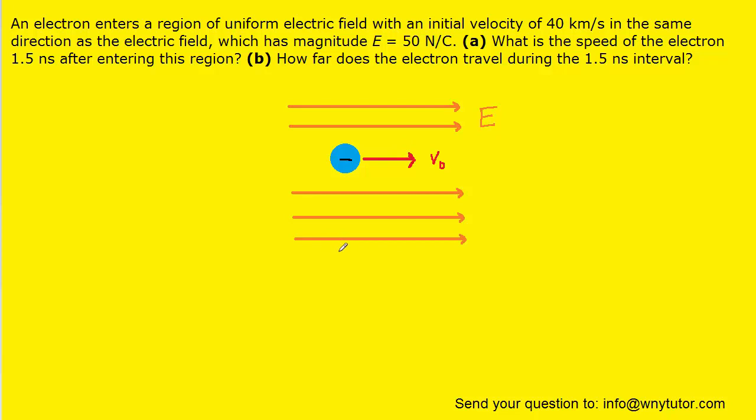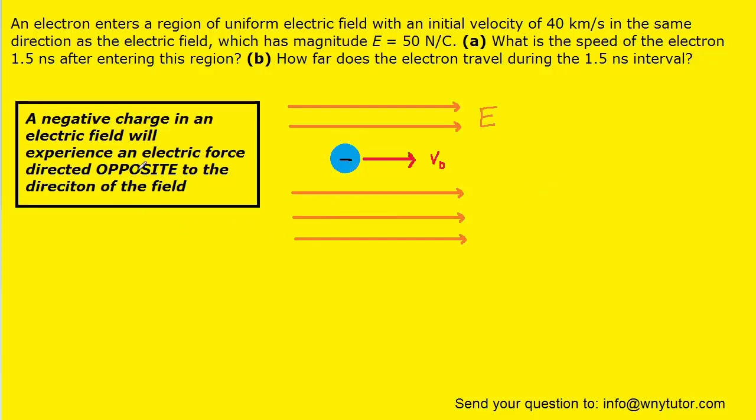And to understand the key to this question, we want to note the following fact about a negative charge placed in an electric field. And here is that key idea. It turns out that a negative charge that is placed in an electric field will experience an electric force directed opposite to the direction of the field. The key, of course, being opposite.